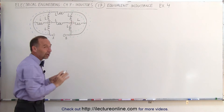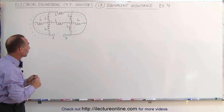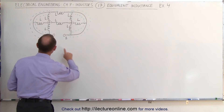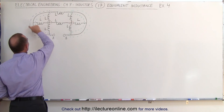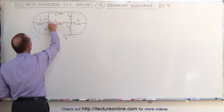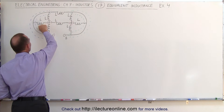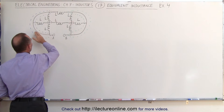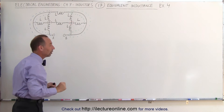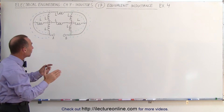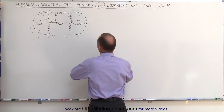Hopefully the different colors will help us keep track of these various branch points. Now starting out from A, notice this is a single branch point. We're able to get to this branch point via this inductor, this inductor, or this inductor — which means going from the blue to the brown branch point, there are three different inductors, three different paths. So those paths are in parallel.